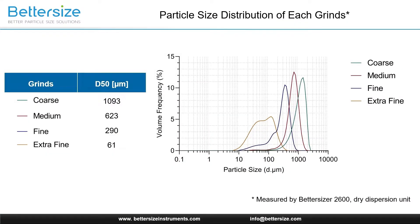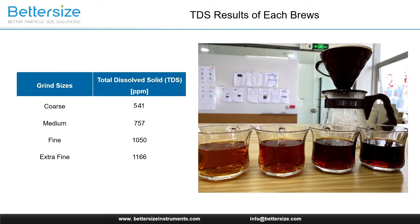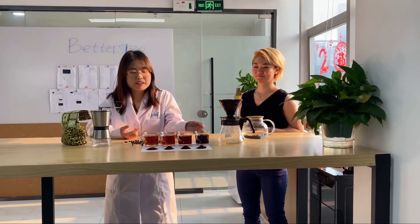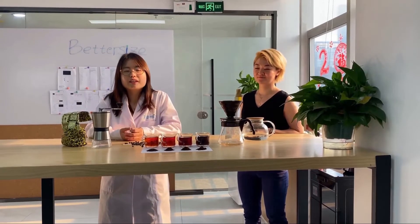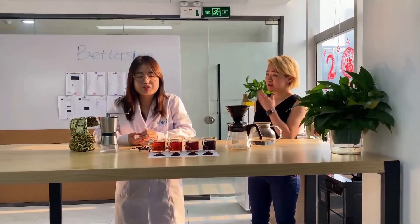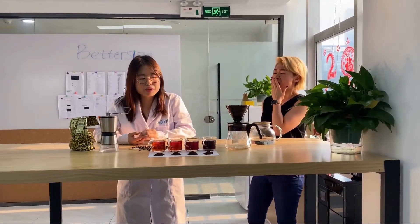Here are the particle size distribution curves obtained from the Betasizer 2600. Fine coffee grinds produce brew with higher extractions, leading to a stronger flavor. Now you know why different sizes of coffee affect your taste. For the coarse one, you will want to use cold brew.